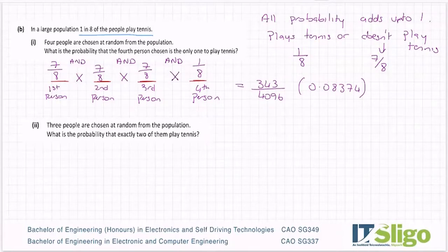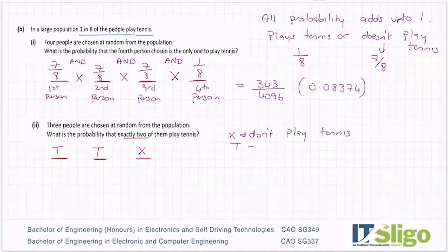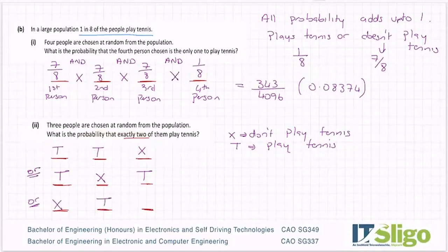Three people are chosen at random from the population. What is the probability that exactly two of them play tennis? There's person one, person two, person three. One combination is: plays tennis, plays tennis, doesn't play tennis. But there's also: plays tennis, doesn't play tennis, plays tennis. Or: doesn't play tennis, plays tennis, plays tennis. I think those are all three combinations.